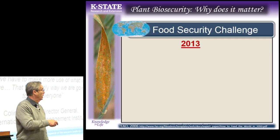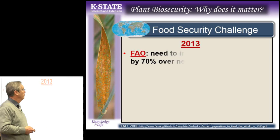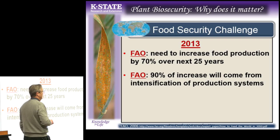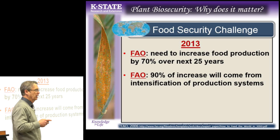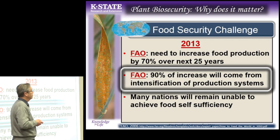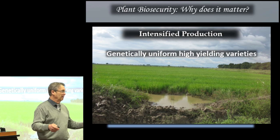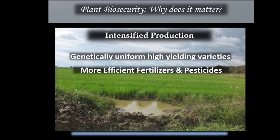We need to increase food production by 70% over the next 25 years, and 90% of that will come from intensification of existing production systems — that's what FAO said. Many nations will remain unable to achieve food self-sufficiency. Intensification normally means genetically uniform, high-yielding varieties and all the vulnerabilities that go with that, more efficient fertilizers and pesticides and all the toxicities and human health issues that go with that, and improved irrigation systems and all the water issues that go with that. Currently, 70% of the Earth's fresh water goes to agriculture. Only 23% of the world's cropland is irrigated, however it provides 40% of our food.